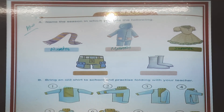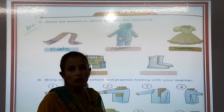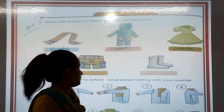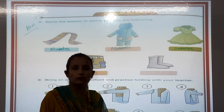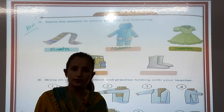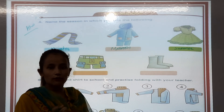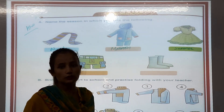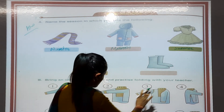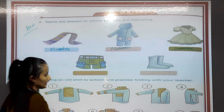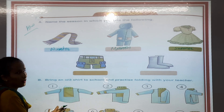Activity: bring an old shirt to school and practice folding with your teacher. You can do this at home also, because school is closed. Ask your mommy for an old shirt or your school uniform shirt. Then, following the steps in the book — step one, two, three, four, five, six, seven, eight — practice folding at home.